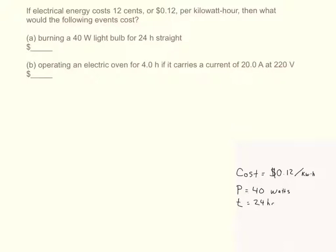For part A, we have the cost per kilowatt-hour. Kilowatts are power. Power is equal to work over time. If you solve for work, work equals power times time. So what you have in a kilowatt-hour is a kilowatt, which is power, times an hour, which is time. So this equals the work, or the energy. Work and energy is the same thing.